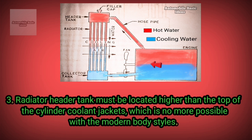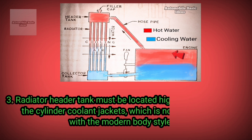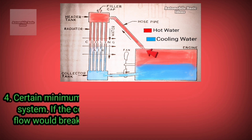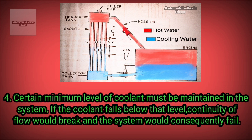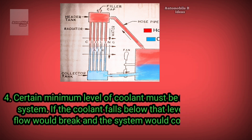The radiator header tank must be located higher than the top of the cylinder coolant jackets, which is no longer possible with modern body styles. Furthermore, a certain minimum level of coolant must be maintained in the system. If the coolant falls below that level, continuity of flow would break and the system would consequently fail.